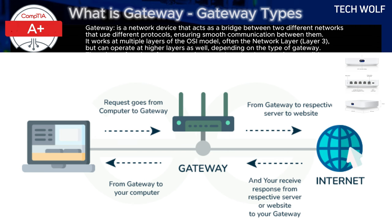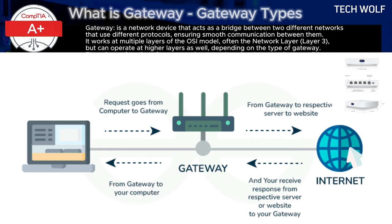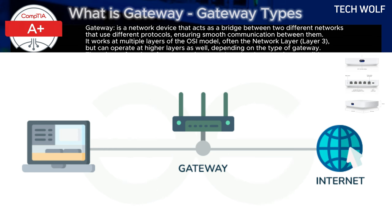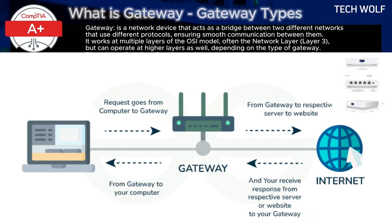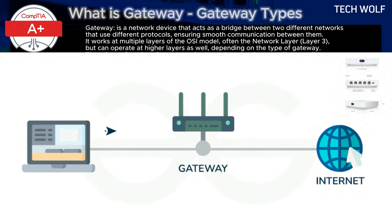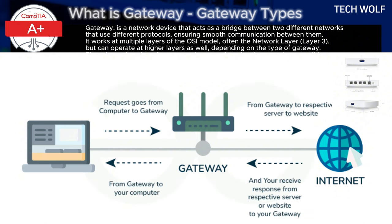A gateway converts protocols between networks, ensuring that data can move seamlessly across different environments. For example, when data moves between a company's internal network (LAN) and the public internet (WAN), the gateway makes sure that data can travel across both networks by converting protocols.